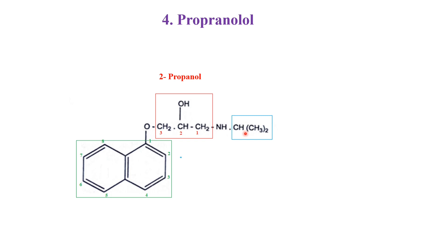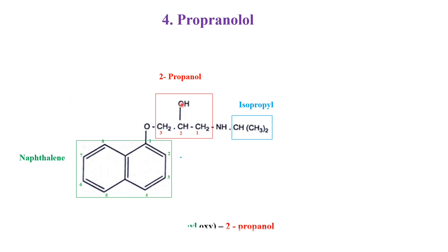The first carbon is connected with an isopropyl amino group, and the third carbon is connected with naphthalene and oxygen — that is, naphthalene oxy. So, what is the chemical name? It is 1-isopropyl amino-3-naphthalene oxy-2-propanol. That is the chemical name.